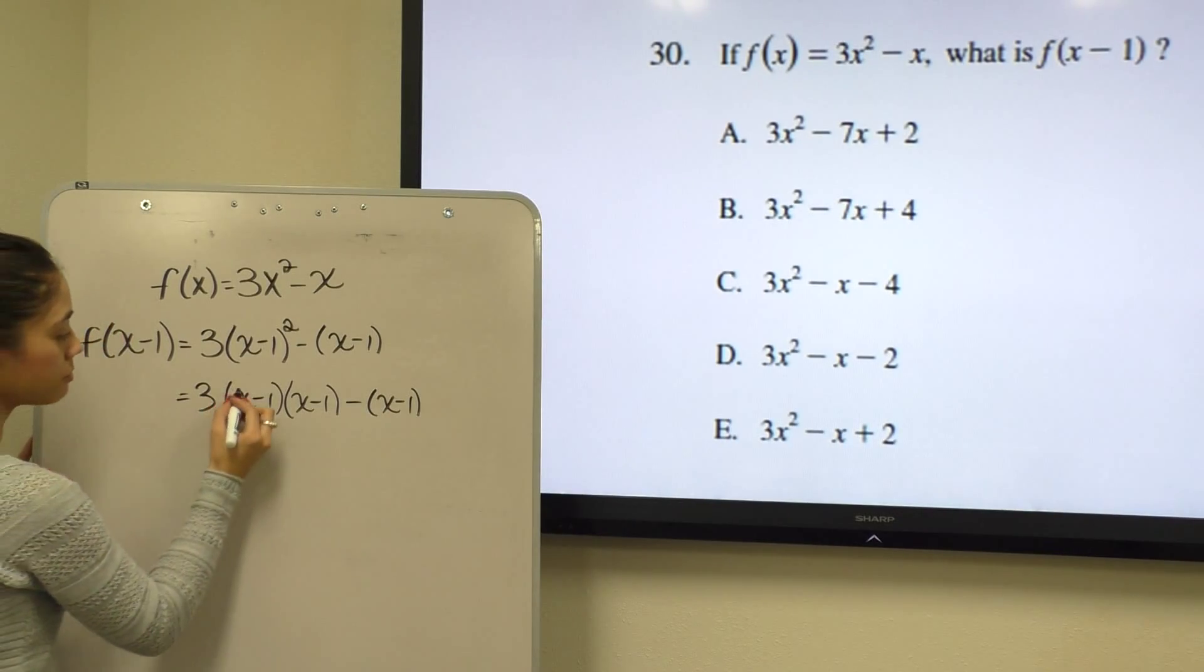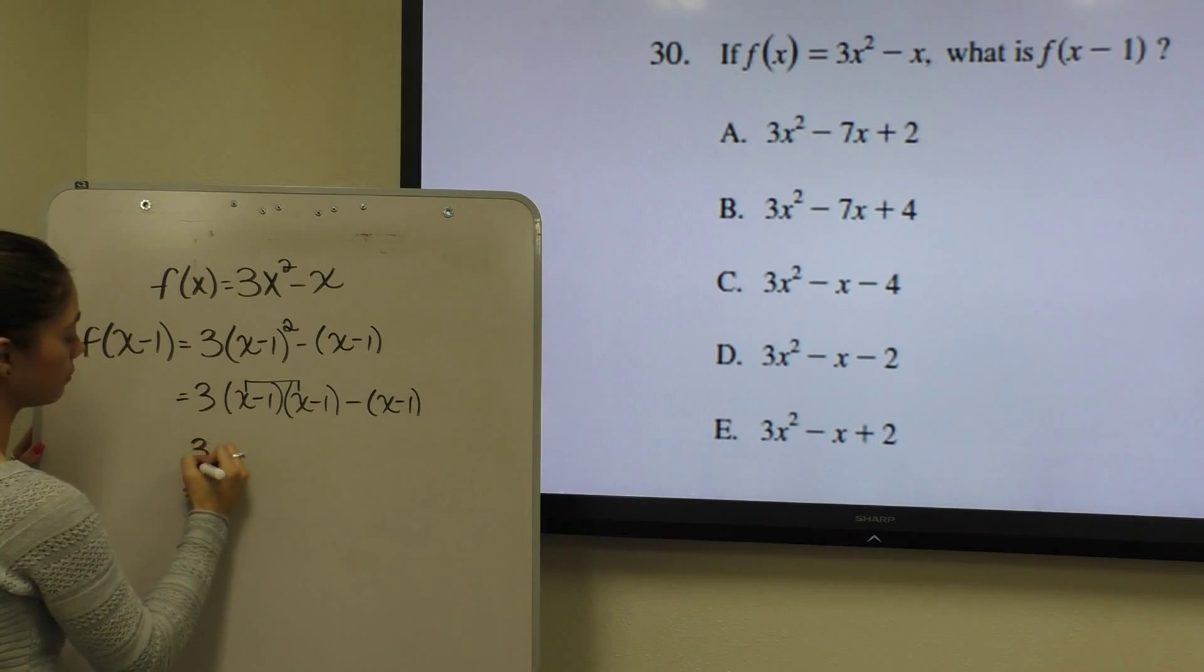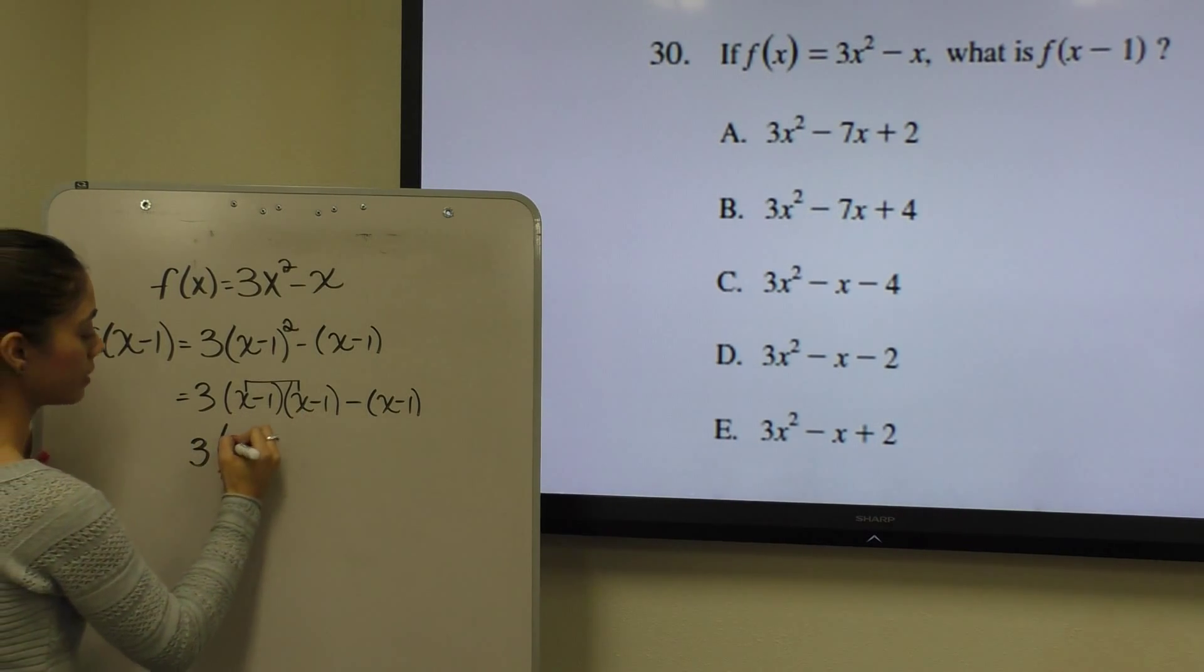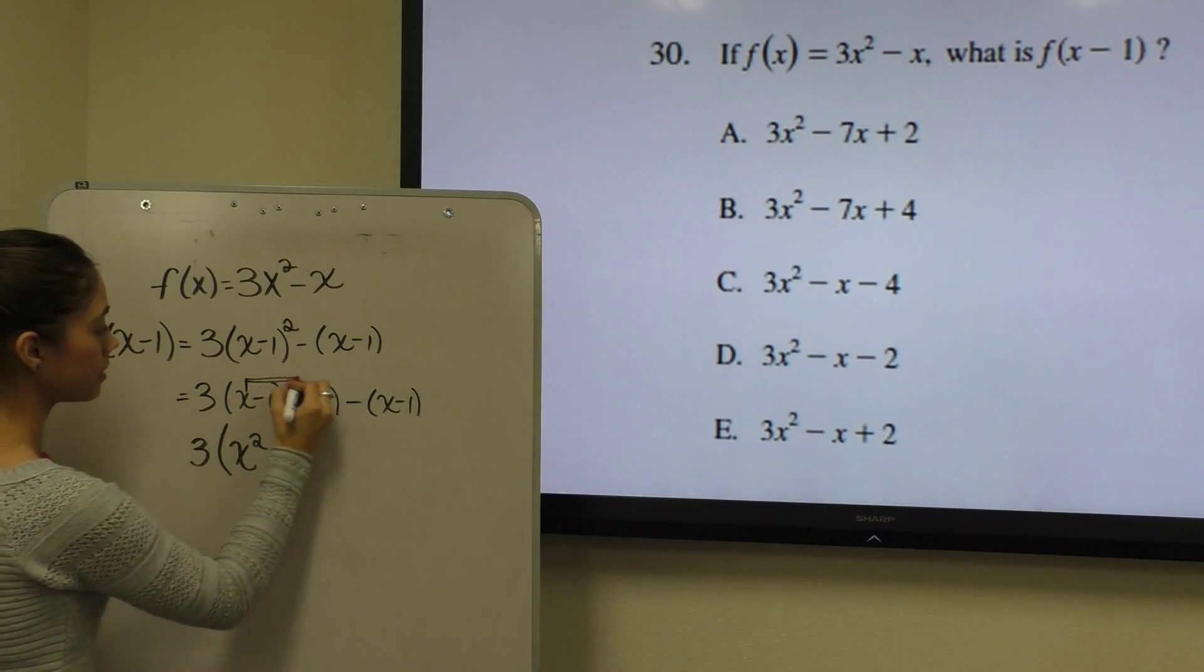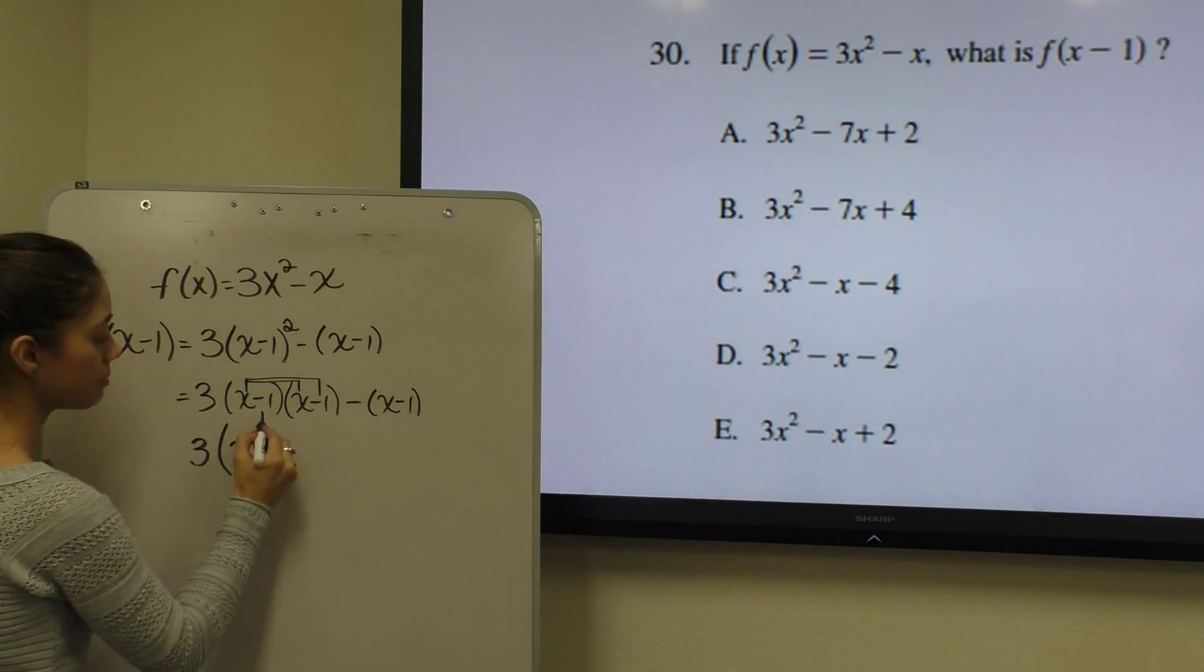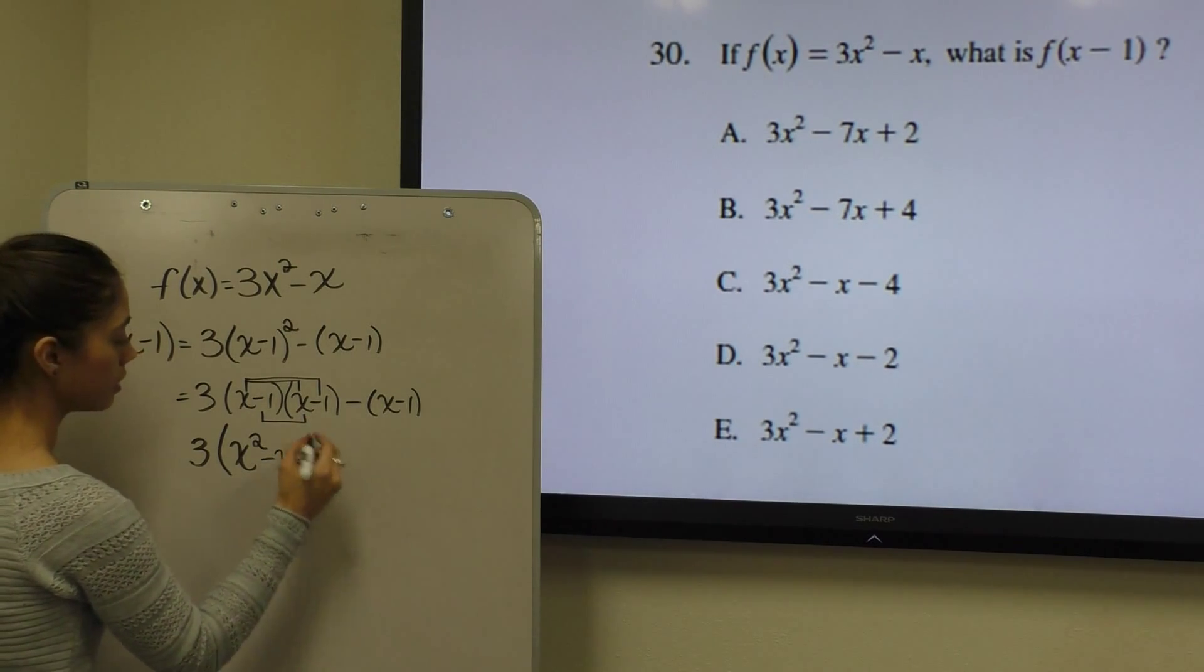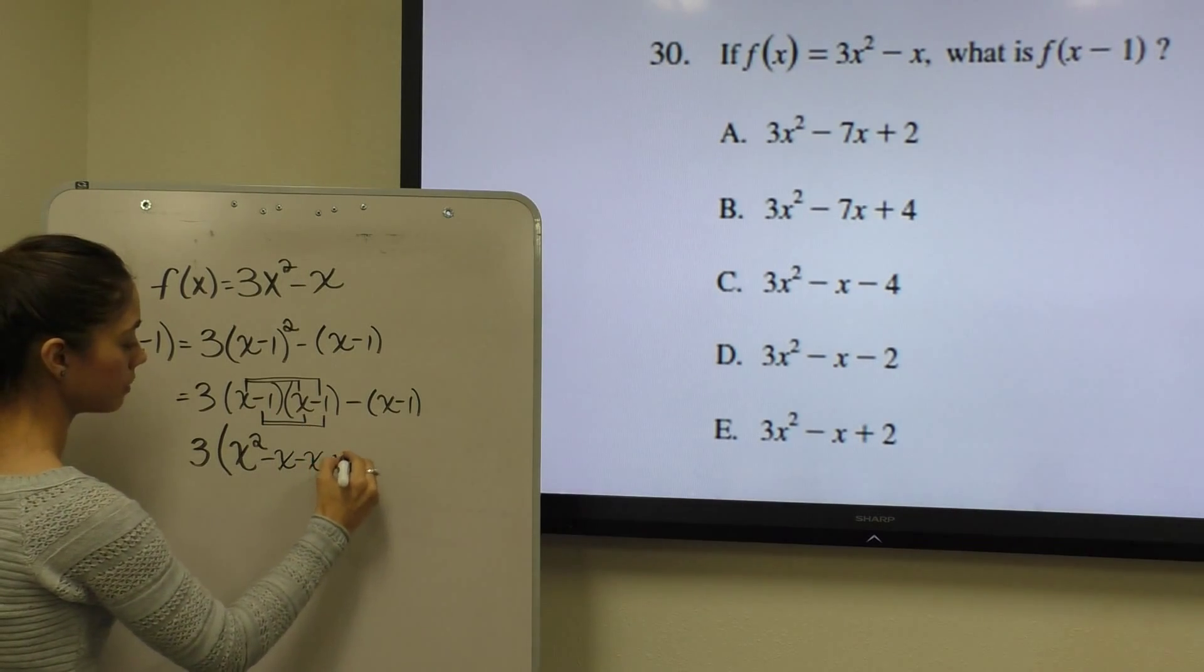So I will multiply x times x. I will bring down my 3 first. Don't forget your 3. Now I can say x times x is x squared. And then I multiply x times negative 1 to give me negative x. And then I move on to my next term, negative 1, and multiply that by x as well to get another negative x. And then I multiply negative 1 by negative 1 to get positive 1.